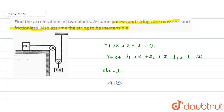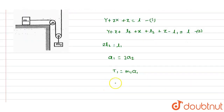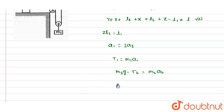By differentiating this equation twice with respect to time, we get a1 = 2a2. So the acceleration of block m1 is twice the acceleration of block m2. For block m1 we write T1 = m1·a1, and for block m2 we write m2·g − T2 = m2·a2. Since the pulleys are massless, we get T2 = 2T1.